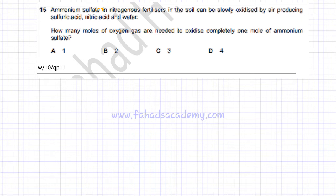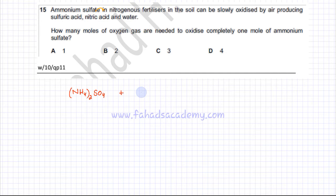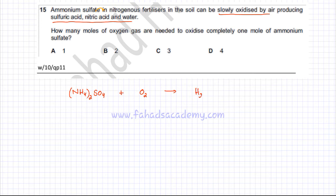We need to construct and balance the equation. Ammonium sulfate reacts with oxygen gas from air — since it's being oxidized — and produces three things: sulfuric acid (H₂SO₄), nitric acid (HNO₃), and water (H₂O).